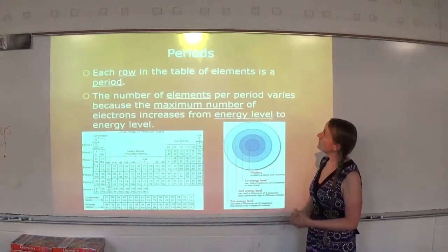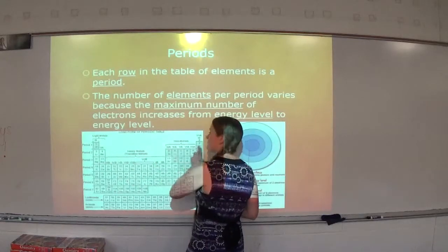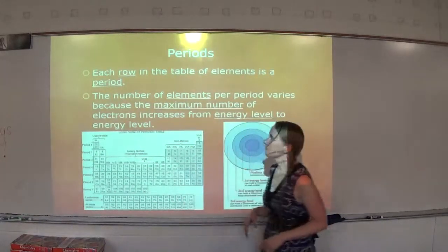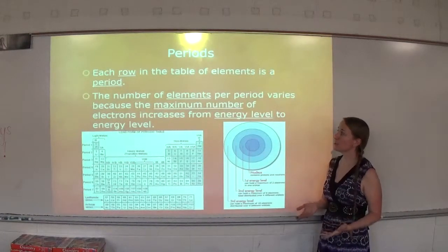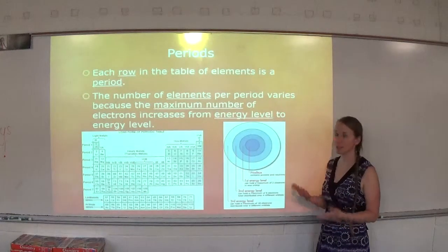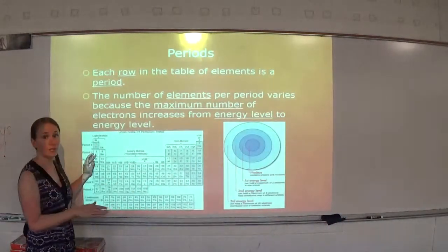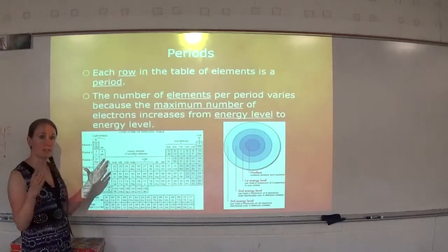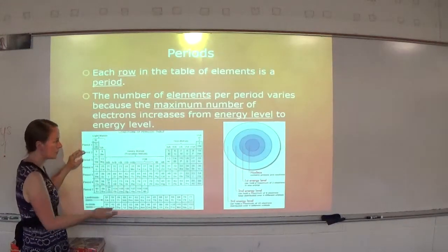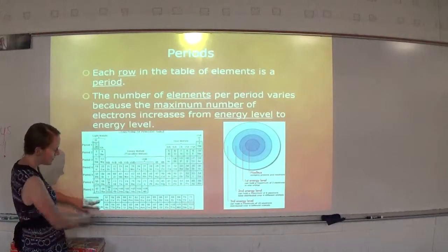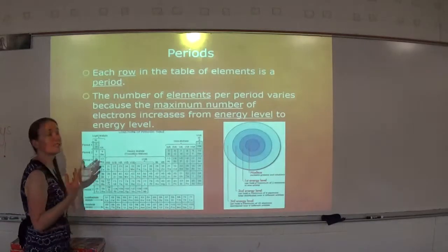Each row in the periodic table of elements is called a period. The number of elements per period varies because the maximum number of electrons increases from energy level to energy level. One row represents an energy level on the atom, like when we're talking about the electron cloud. Each row represents an energy level, so we have 1, 2, 3, 4, 5, 6, 7 rows. These two actually plug in right here, so we have 7 rows, 7 energy levels.